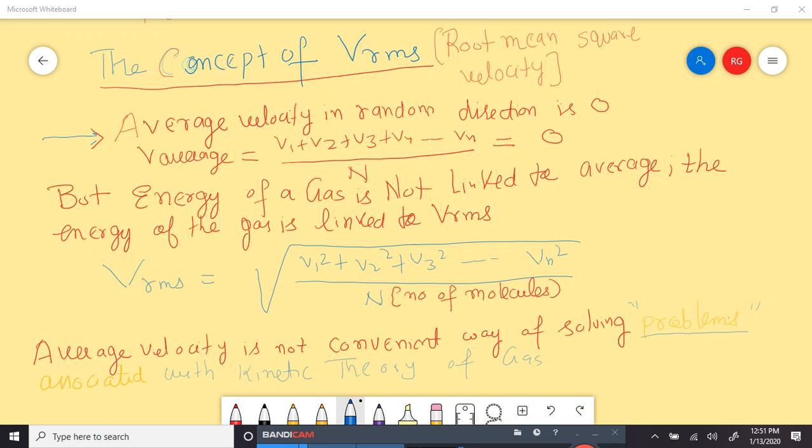A better way to solve this problem is to use the concept of root mean square velocity. Now, if you look into this, the root mean square velocity is the sum of the squares of the velocities of molecule divided by number of molecules, and then we take the square root of that.